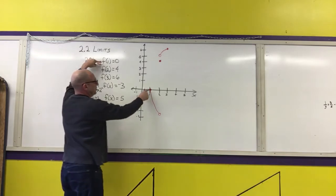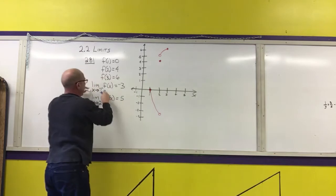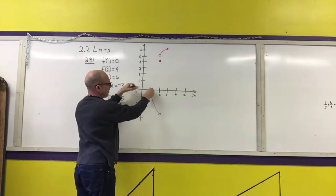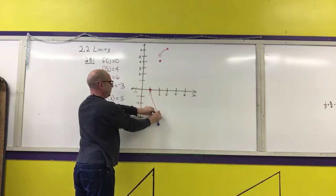We'll check. F of 1 is 0, f of 2 is 4, f of 3 is 6. As I approach 2 from the left, as I go this way along the graph approaching 2 from the left, my graph does approach negative 3.